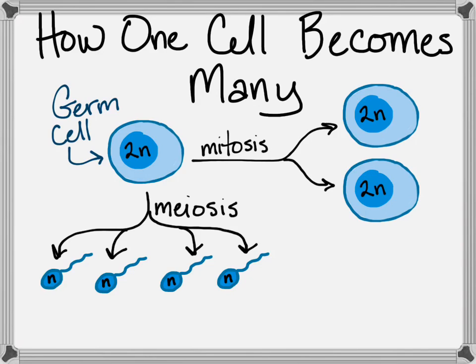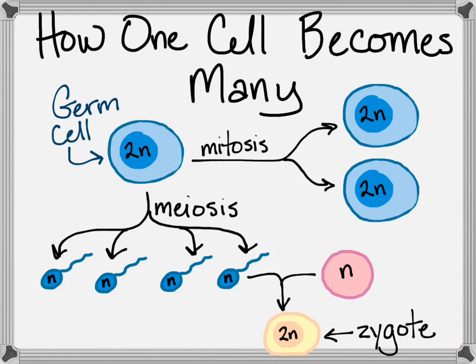One of these gametes fuses with another gamete during sexual reproduction, and that creates a diploid zygote. This process is called fertilization.